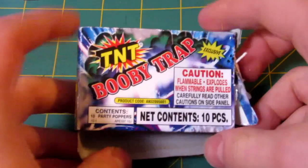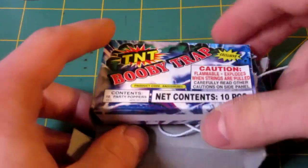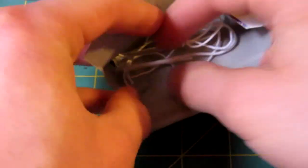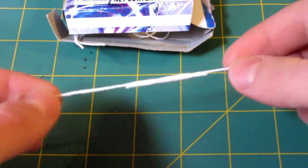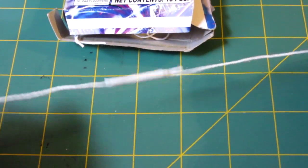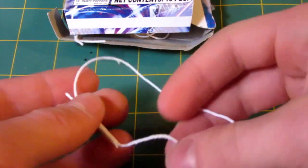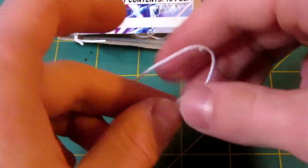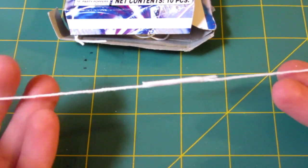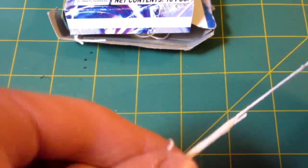Now I got these little TNT booby trap things in the States, here's what they look like. Now if you are like me and don't live in the States or can't get any, you can get something very similar out of a Christmas cracker that you can buy at the dollar store. Take it apart carefully and you'll get something that looks just like this, with two strings and a charge in the middle.